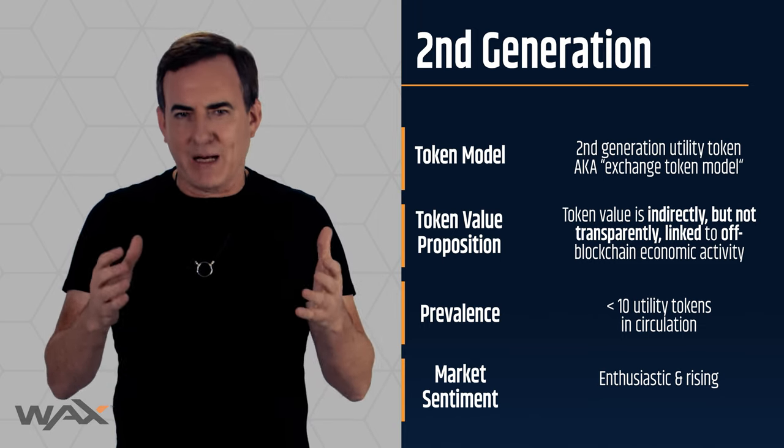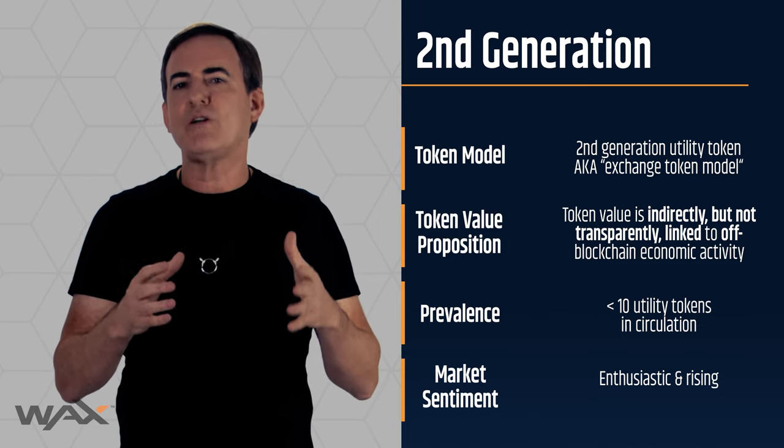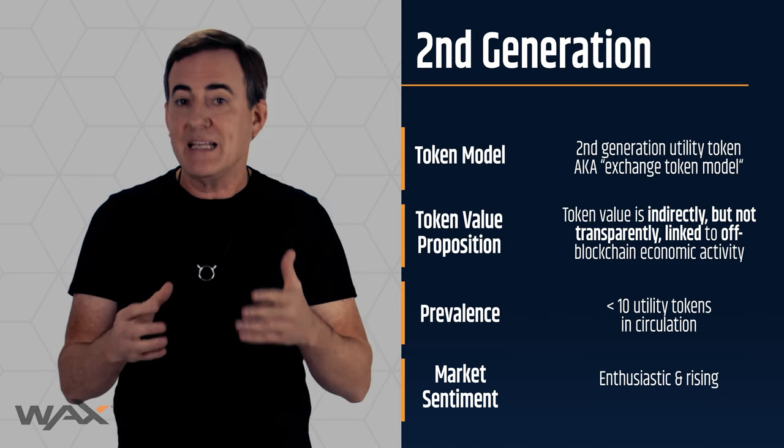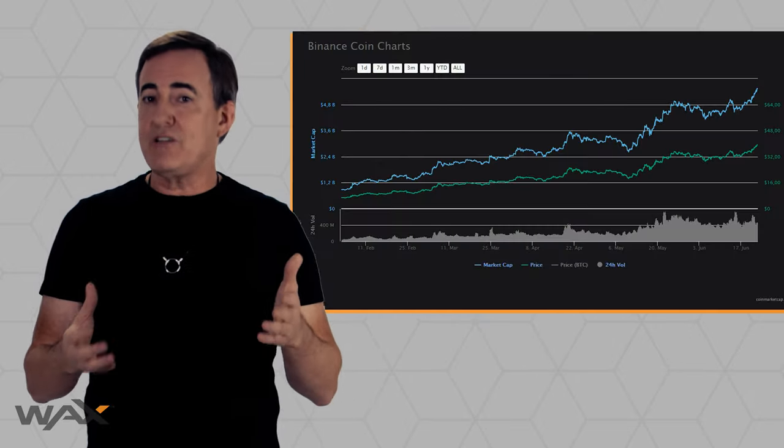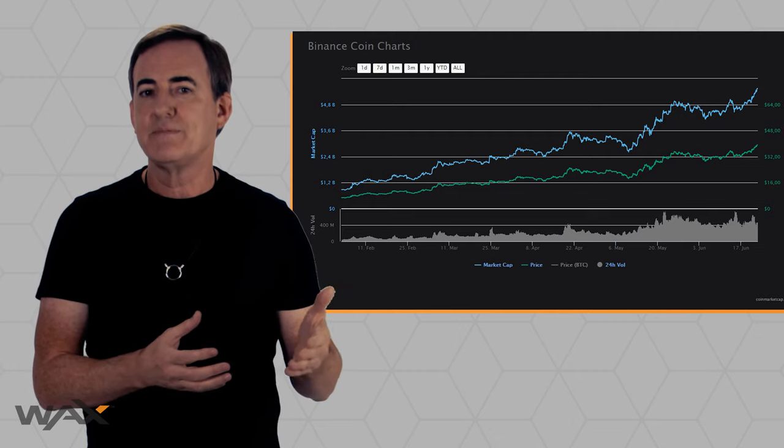What is appealing to a lot of people about second generation utility tokens is that these tokens offer holders a way to share in some economic activity. They have a security token-like quality in that regard, and the market responded to this in 2019 very positively. Binance's BNB token went from about 800 million market cap in January to a high of over 5 billion dollars. In a bad market for utility tokens, the BNB token finished the year with a market cap of over 2 billion dollars.